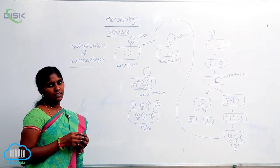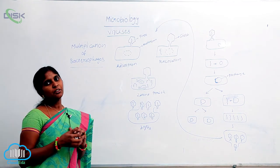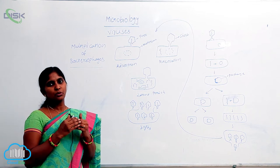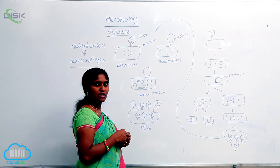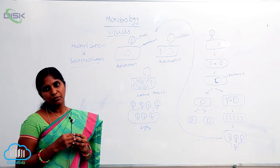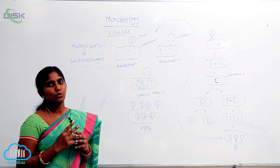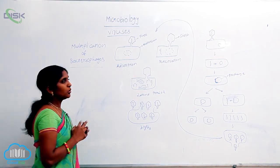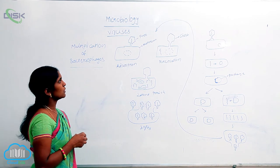In the lytic cycle, at the end of the lytic cycle, the host is going to die. But in the lysogenic cycle, the host remains alive. That is the difference between these two mechanisms. Both are multiplication of bacteriophages.